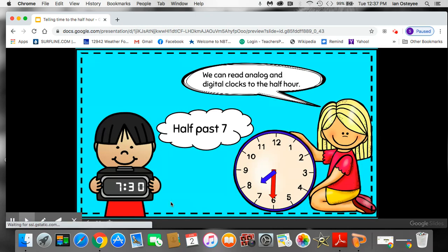Let's practice. We can read analog and digital clocks to the half hour. Since half of the clock is gone in the hour, we could say half past 7. So half past 7 looks like this on an analog clock. The hour hand is between 7 and 8. So we read the number behind the hour hand, the one that just passed. So this is 7. And since the minute hand fell down, got dirty, we know we say 30.